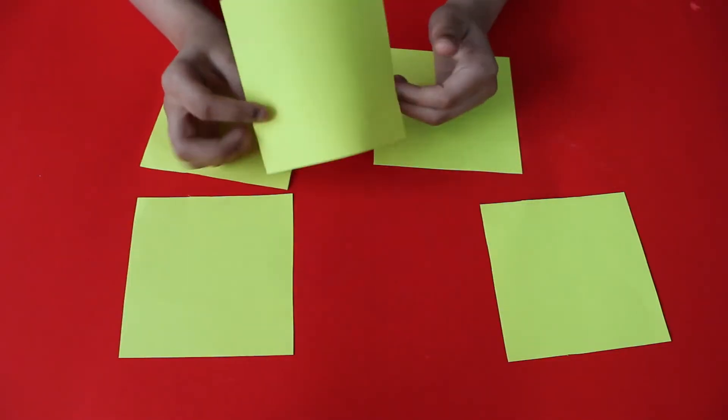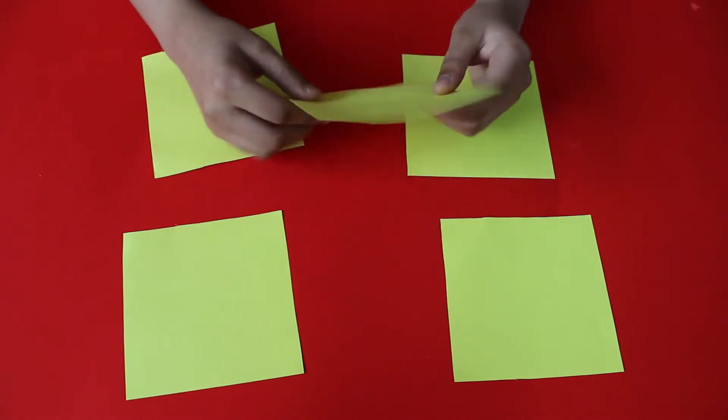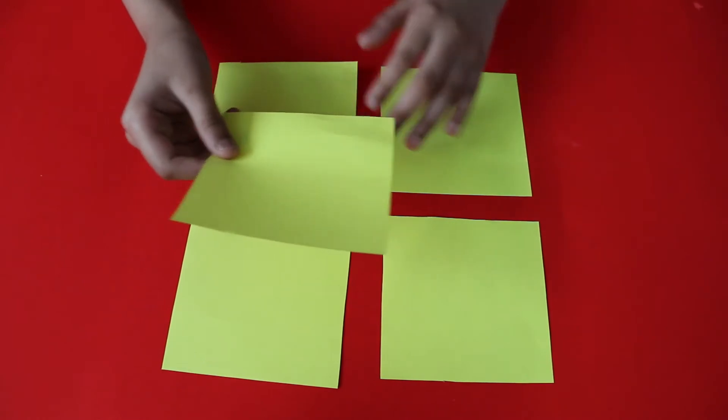To make a star we need five square sheets. You can pick any size depending on the size of the star you want. I am taking a square of size 10 by 10.